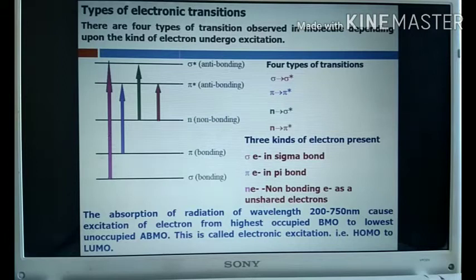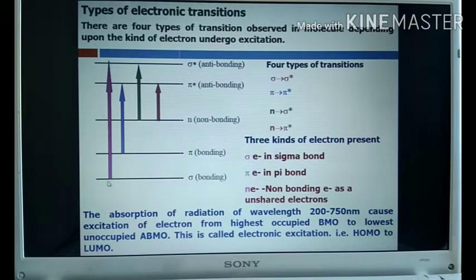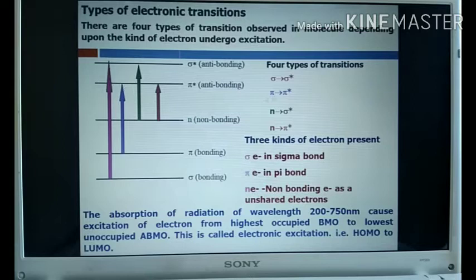The first transition is sigma to sigma star, which is a high energy transition. Because energy and wavelength are inversely proportional, it shows very low absorption wavelength. The second is pi to pi star, comparatively less energy than sigma to sigma star. The third is n to sigma star, and the fourth is n to pi star.